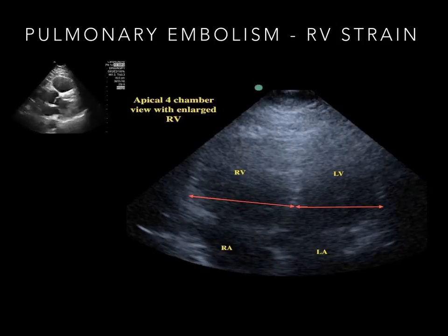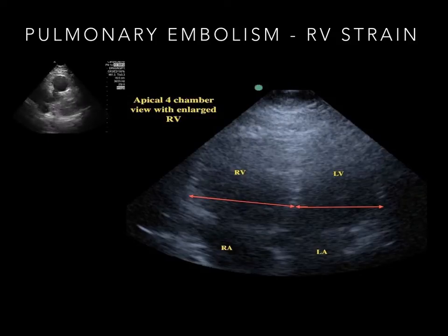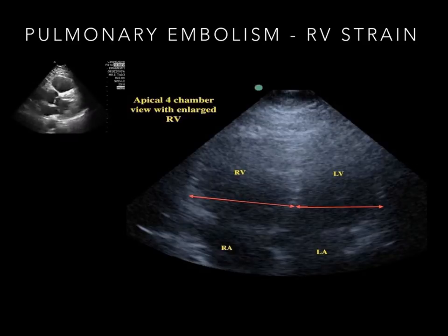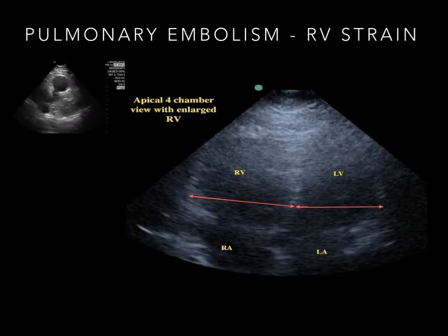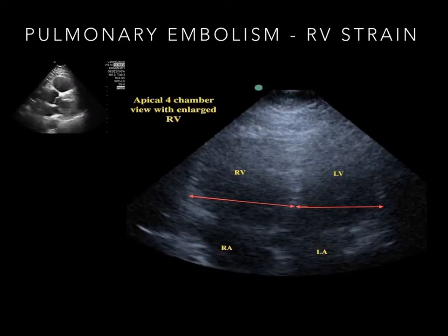A healthy right ventricle is two-thirds the size of its left counterpart. Right heart strain, however, results in right ventricular dilation, with the ventricle appearing as large or even larger than the left ventricle.